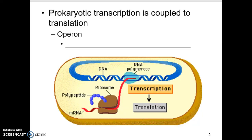What we see with prokaryotic transcription is that it's coupled to translation, meaning they're basically connected and locked together as that process occurs. This is a little bit more closely linked than what we see in the eukaryotic type of DNA to RNA to amino acid chain process, or transcription and translation. A term I want you to be familiar with is operon.